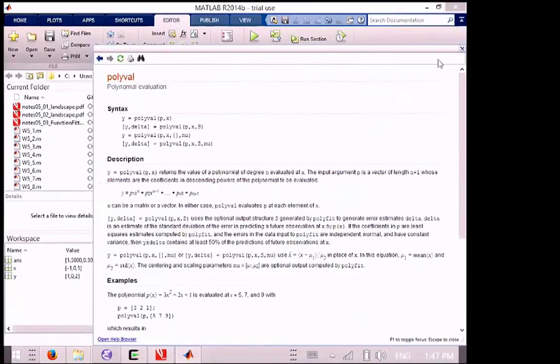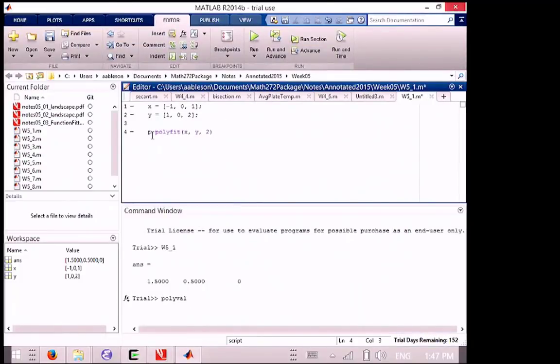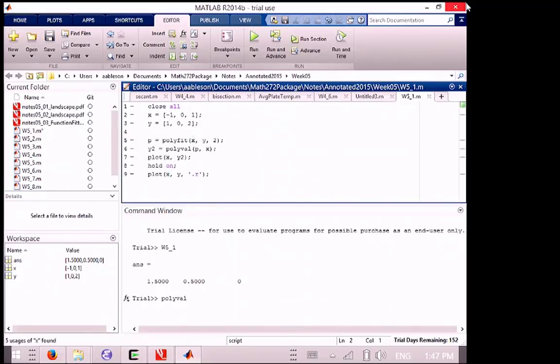MATLAB, close. So we're going to call this fitting thing P because it's the polynomial, or at least the coefficients of the polynomial. P equals that. And then Y2 is going to equal polyval of that polynomial. Let's try the same X coordinates to see what happens. And then we're going to plot X against Y2. And why not, we'll do a hold on. And we're going to plot our X versus Y as dots that are red. So a couple new lines of syntax, the polyfit and the polyval. The rest of it's just generic plotting.